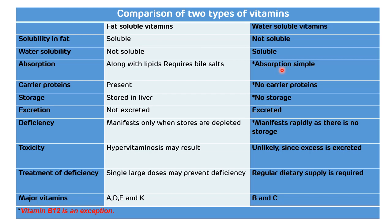Carrier proteins are required for the transport of fat-soluble vitamins, while water-soluble vitamins do not require carrier proteins, except vitamin B12. Fat-soluble vitamins are stored in the liver, whereas water-soluble vitamins are not stored, except vitamin B12.